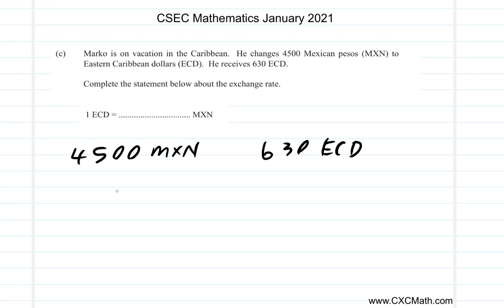Okay, you worked it out. What did you get? Let's see. 630 ECD is equal to 4,500 MXN. You want 1 ECD is equal to what? How do you turn 630 ECD to 1 ECD?